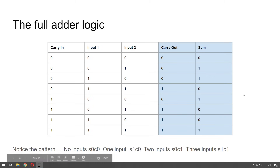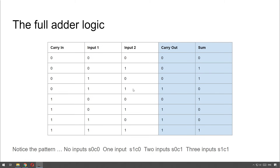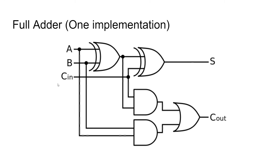We need a circuit to cope with that. When all three are on you need an AND gate. When only one is on you need the sum, so you need a kind of three-input exclusive OR. And you need something to cope with two of them being on but one off. This is where we create the circuit for a full adder.